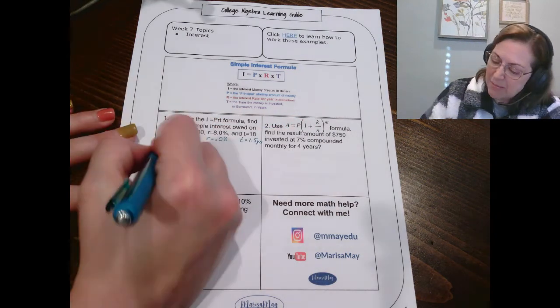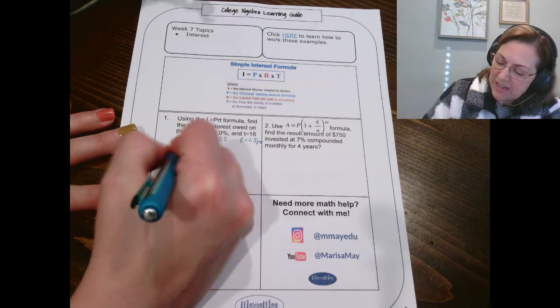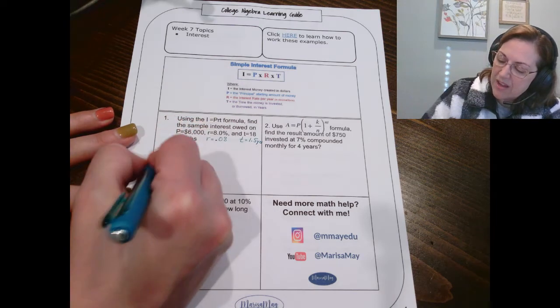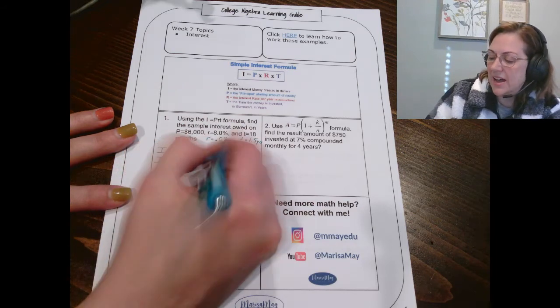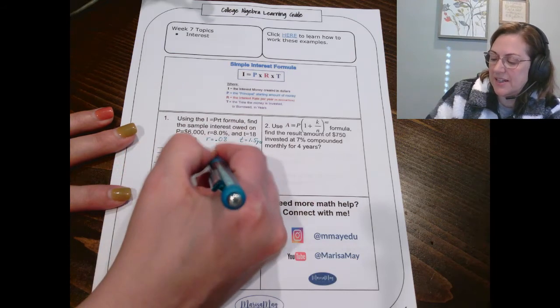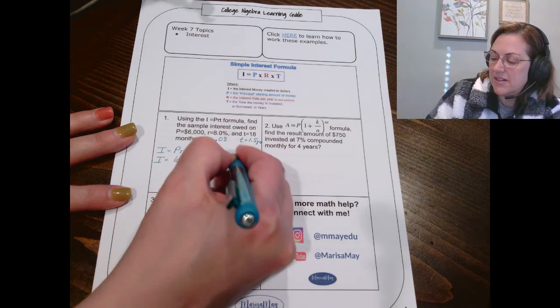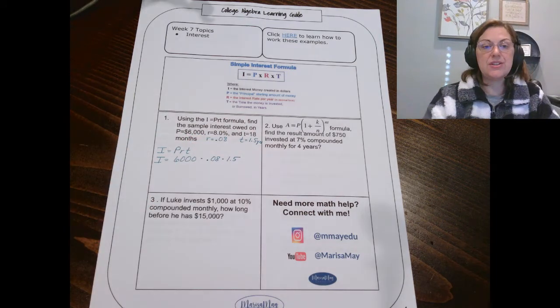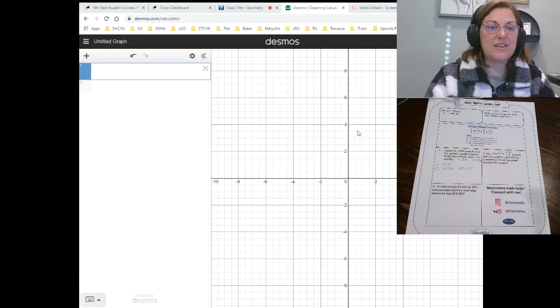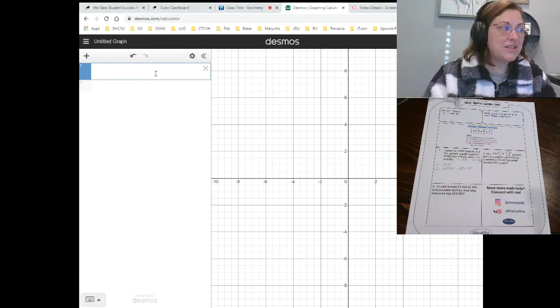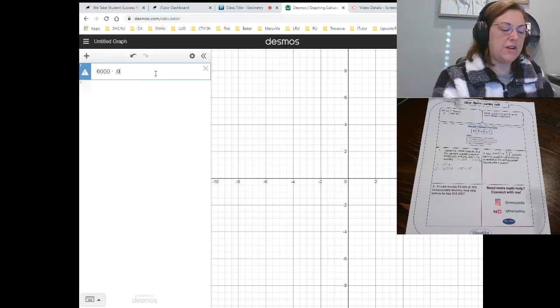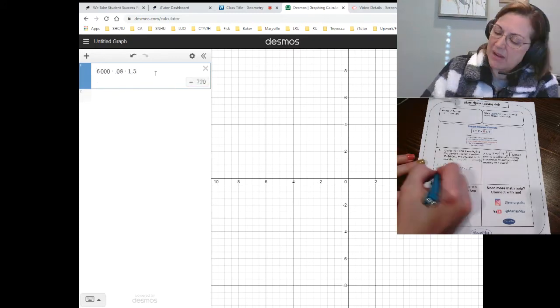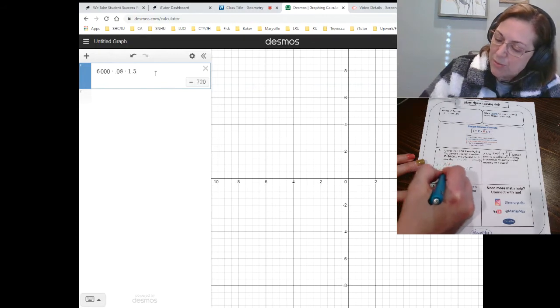Now I can plug it into my formula. So I've got I equals PRT, interest equals principal times rate. Remember it's got to be as a decimal times time in years. And I'm going to switch our view so you can see the Desmos graphing calculator. I'm just going to type this in. I've got 6,000 times 0.08 times 1.5. And I get that my interest will be $720.